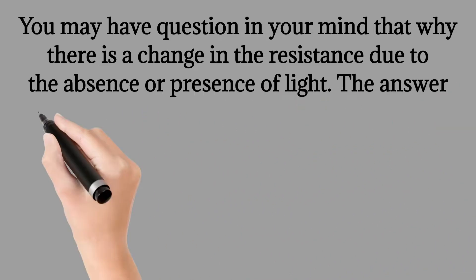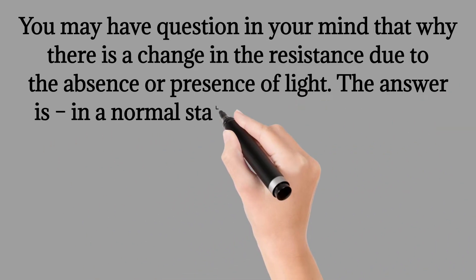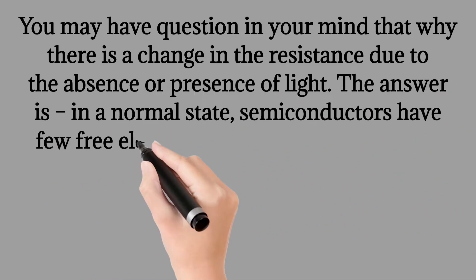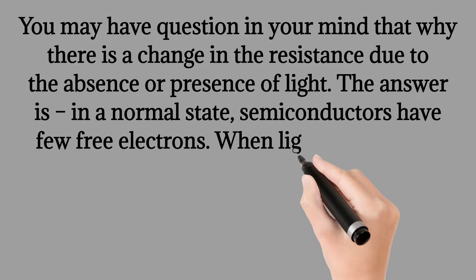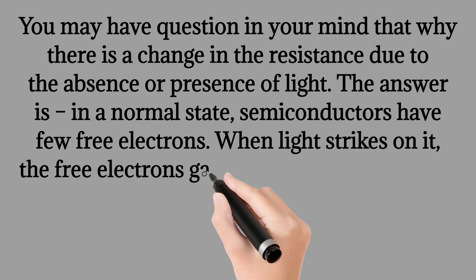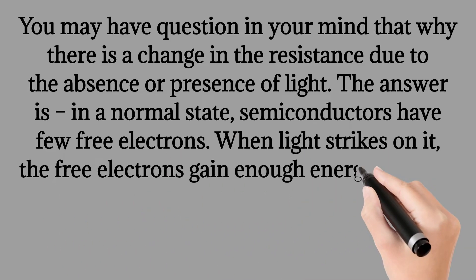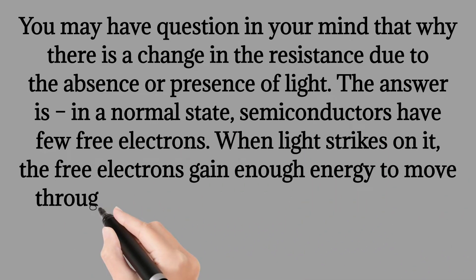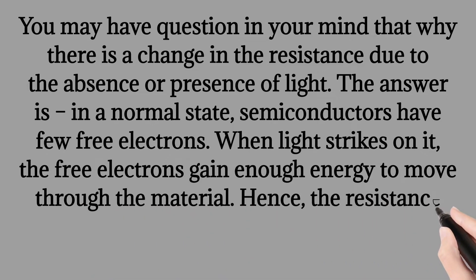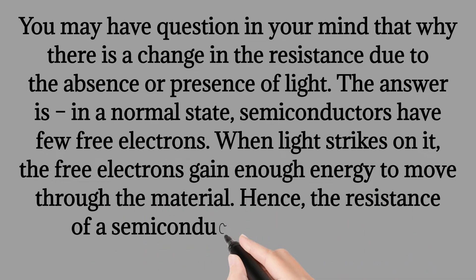You may have a question in your mind: why is there a change in resistance due to the absence or presence of light? The answer is, in a normal state, semiconductors have few free electrons. When light strikes on it, the free electrons gain enough energy to move through the material. Hence, the resistance of a semiconductor material varies.